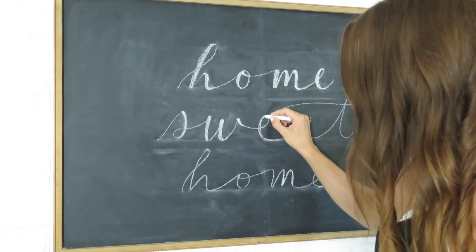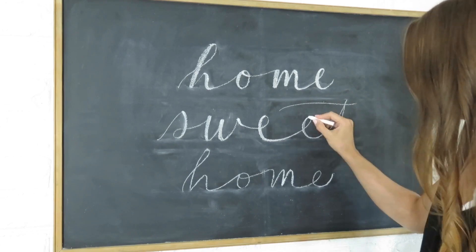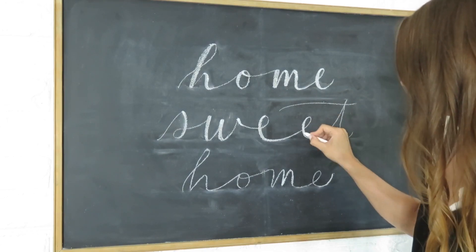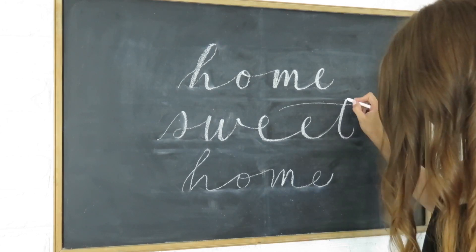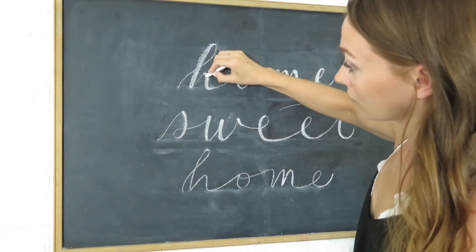Creating the faux calligraphy aspect is very easy. All you have to do is thicken up your downstrokes, so any lines where your chalk is moving toward the bottom of the chalkboard. You want to go for consistency here again and try to make them all the same width.